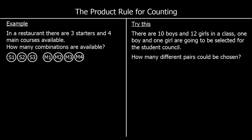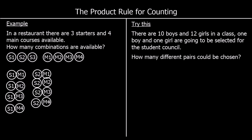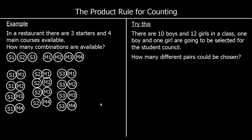We could list all of the possible options. If we pick starter one, we could pick main one, main two, main three, or main four. If we pick starter two, we could pick main one, main two, main three, or main four. And if we pick starter three, we could pick main one, main two, main three, or main four. So we've got one, two, three... twelve different options.